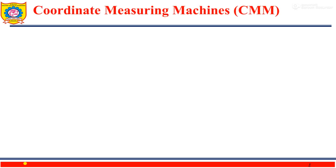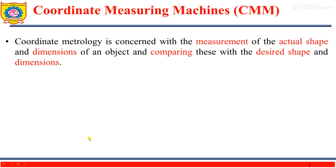Regarding Coordinate Measuring Machines: in previous lectures we covered various measuring instruments, and now we are going to see advanced measuring instruments — that is, Coordinate Measuring Machines. Coordinate metrology is concerned with the measurement of actual shape and dimensions of an object and comparing these with the desired shape and dimensions.